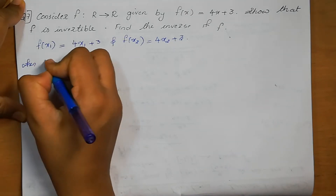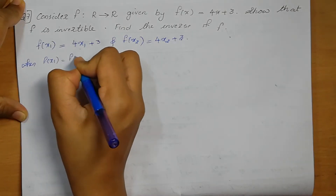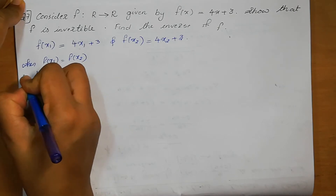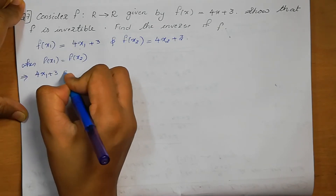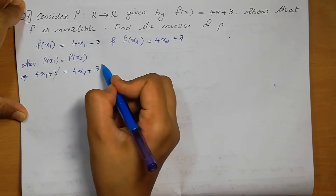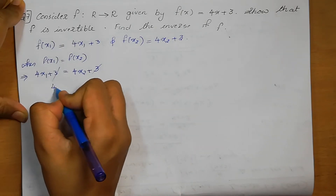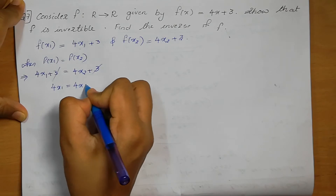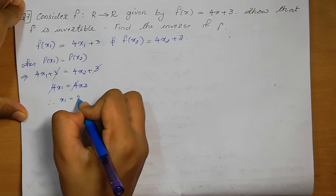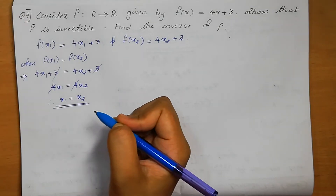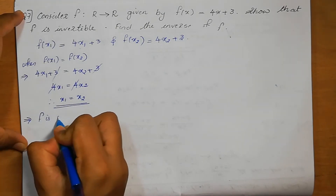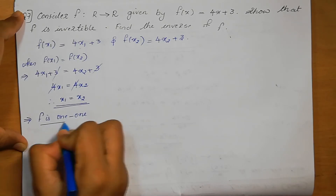When f(x1) = f(x2), we can write 4x1 + 3 = 4x2 + 3. The 3s cancel: 4x1 = 4x2. The 4s cancel. Therefore x1 = x2. x1 = x2 means we can say that the function is 1-to-1. Therefore f is 1-to-1.